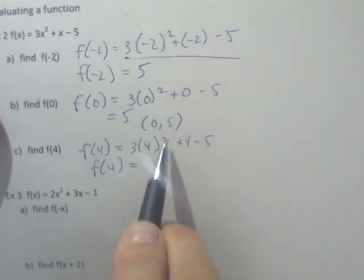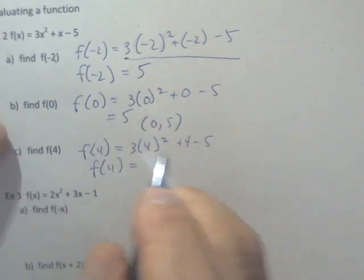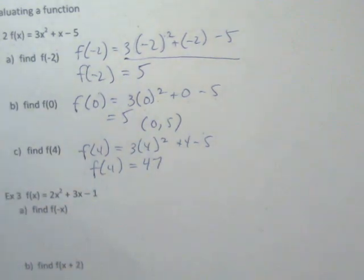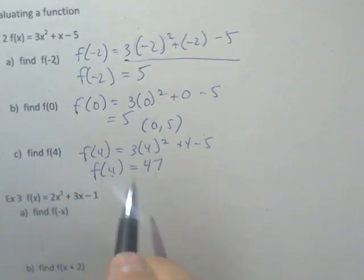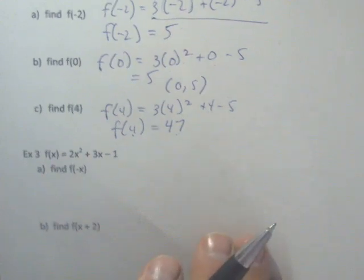F of 4, if I work this out, put in my calculator, 48 plus 4 is 52, minus 1 is 51. These are numerical values we can evaluate in a function, and these are points: x, y ordered pairs.